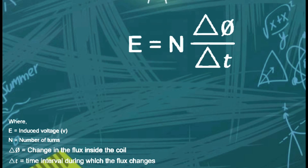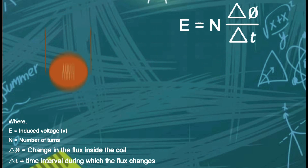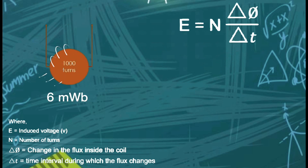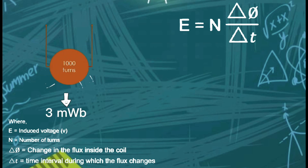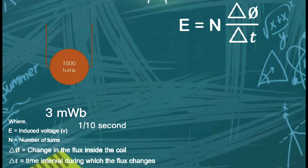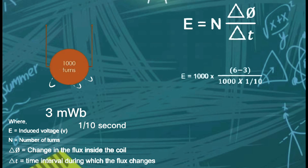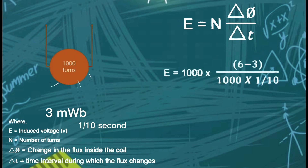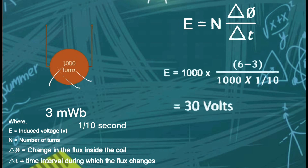For example, you have a coil with 1000 turns which is surrounded by a flux of 6 mW. Then the flux is reduced to 3 mW in one tenth of a second. What will be the voltage induced? Using the formula, we now know that the total amount of voltage induced is 30 volts. This proves the law of electromagnetic force.